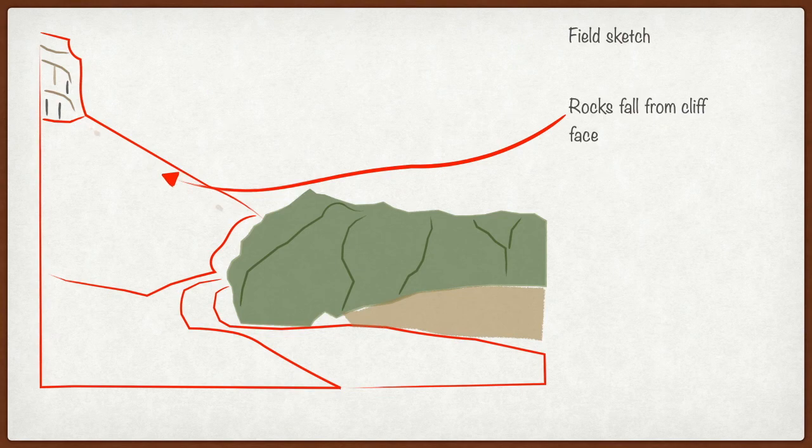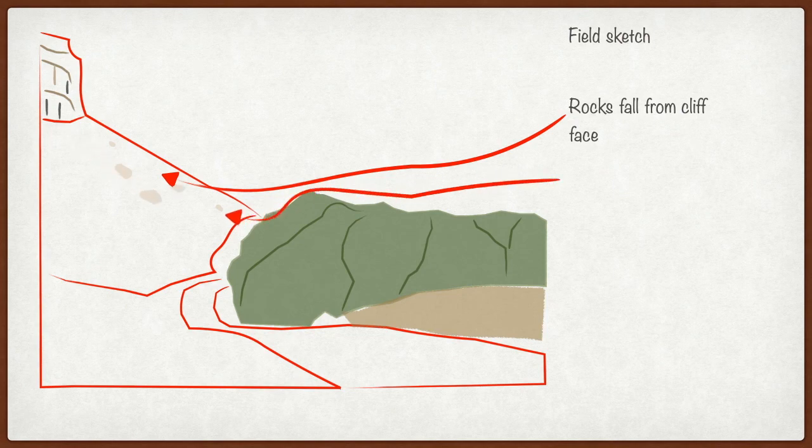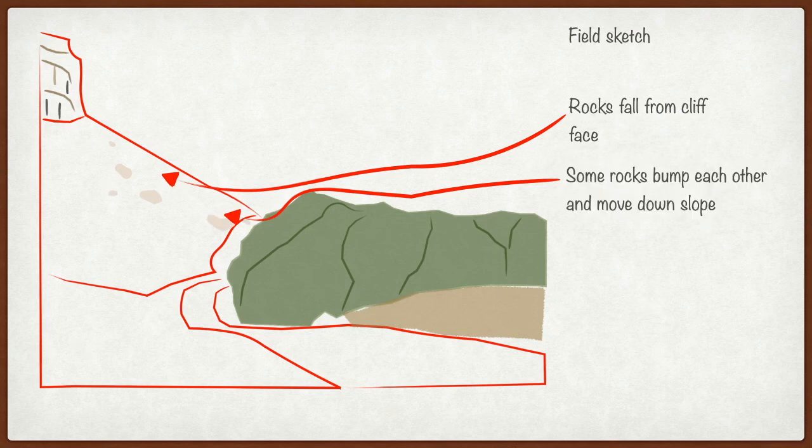From the cliff, we get materials broken down. They fall onto the talus slope. They come to rest there and as they move, they move by gravity. So gravity pulls them down the slope. Some particles bump into each other and then they move down the slope because of that and they become smaller in size.